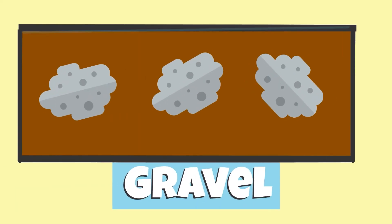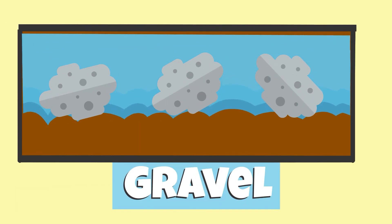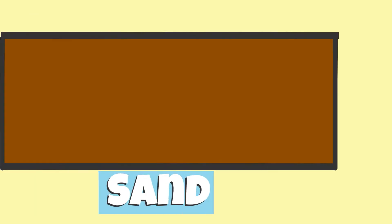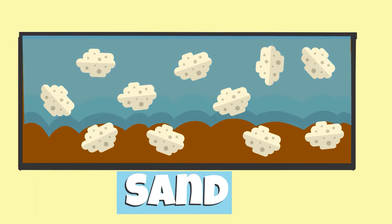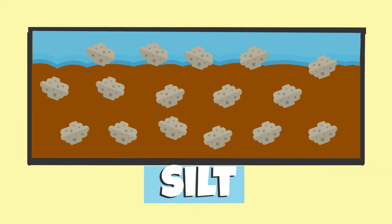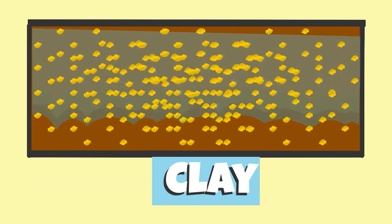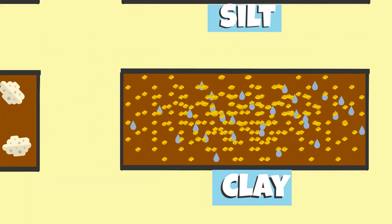For example, gravel has large-sized particles that do not retain water, followed by sand, which also has large-sized particles that retain very little water, then silt, which retains some water, and clay, which retains too much water.